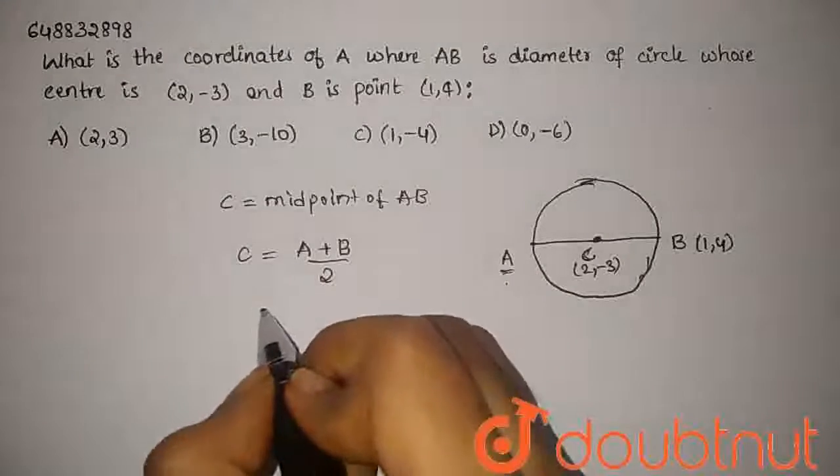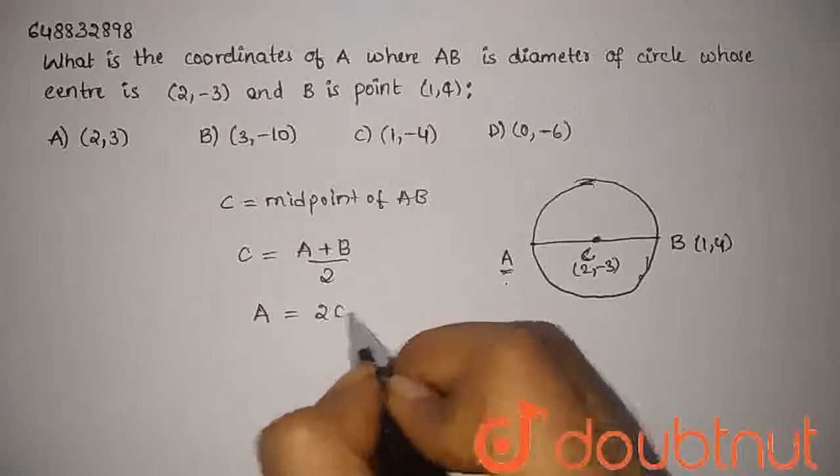So, we can say that C is midpoint of AB. So, these coordinates are 2C minus B.